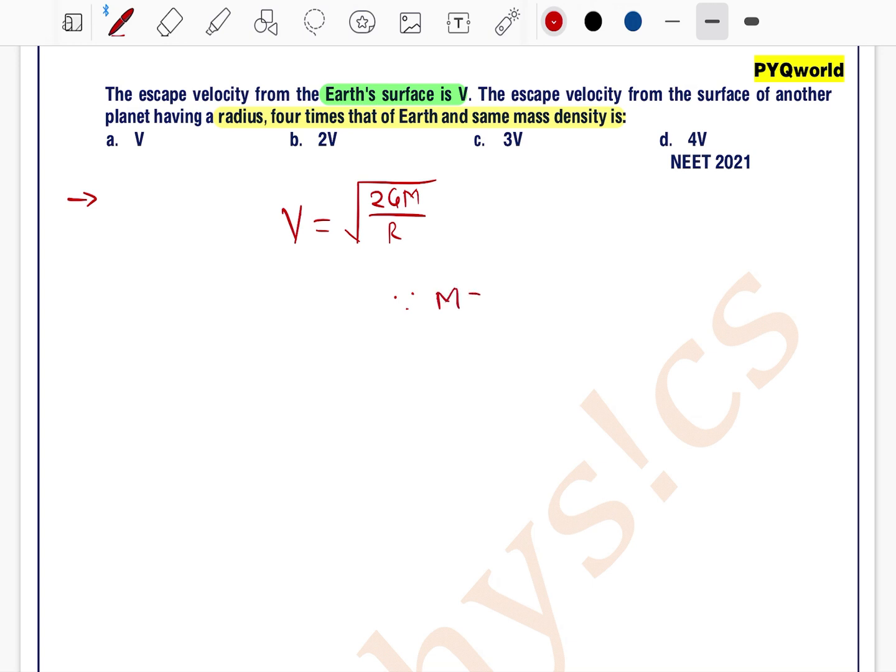So first convert this mass into mass density. Now we know that mass is equal to density into volume. As a planet having a spherical shape we can write volume as 4 by 3 pi r cube.